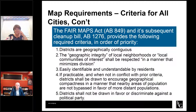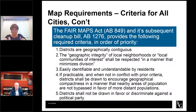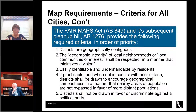The Fair Maps Act and its subsequent cleanup bill provide five criteria in order of priority. First, districts must be geographically contiguous — areas that meet only at the points of adjoining corners are not contiguous, and areas separated by water not connected by a bridge, tunnel, or ferry service are not contiguous. Second, the geographical integrity of local neighborhoods or communities of interest must be respected. Communities of interest are defined as populations that share common social or economic interests that should be included within a single district for purposes of effective and fair representation. These do not include relationships with political parties, incumbents, or candidates — they are like larger HOAs or downtown areas.